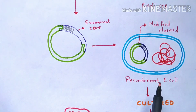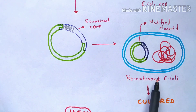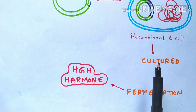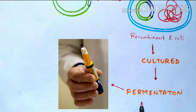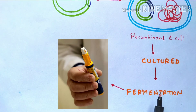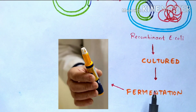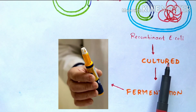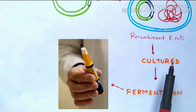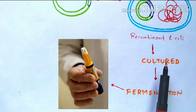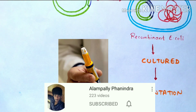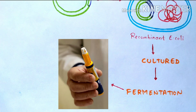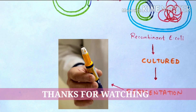The recombinant E. coli is then cultured, causing the number of recombinant E. coli cells to increase. These cells then undergo fermentation. In fermentation, the primary metabolites — the cultured recombinant E. coli cells — are converted into the secondary metabolite, which is the human growth hormone. In this way, the human growth hormone can be synthesized using rDNA technology.